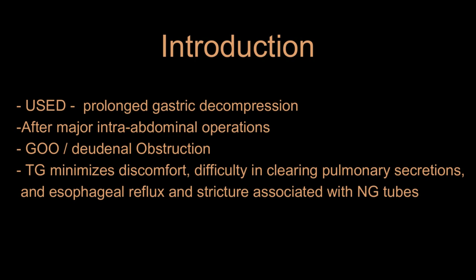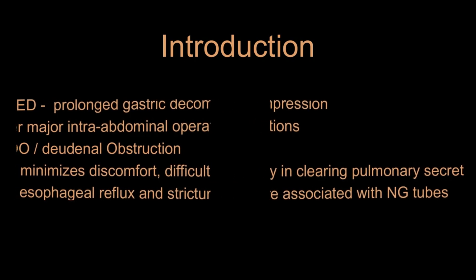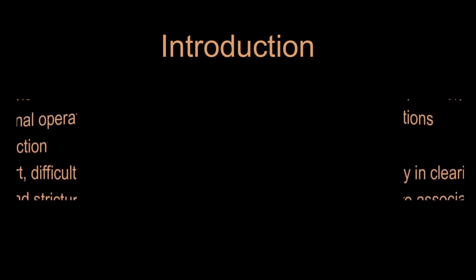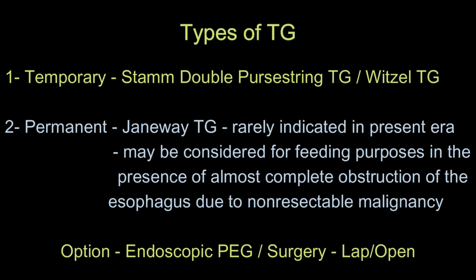Tube gastrostomy minimizes discomfort and difficulty in clearing pulmonary secretions, and helps in early postoperative recovery. There are basically two types of tube gastrostomy: one is temporary, that is STAMP double-purse-string tube gastrostomy and pedicle tube gastrostomy, and another one is permanent, that is Janeway tube gastrostomy.